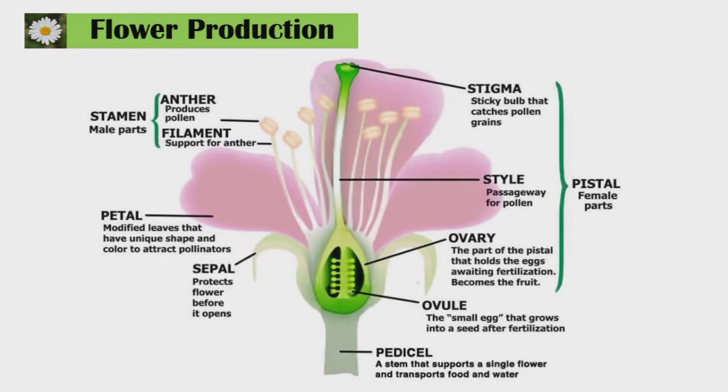After germination, the seedling grows into an adult plant that bears flowers. Flowers contain the male and female reproductive organs of flowering plants. The male organ is called the stamen, which consists of the anther and the filament. The anther produces pollen grains, while the filament supports the anther.